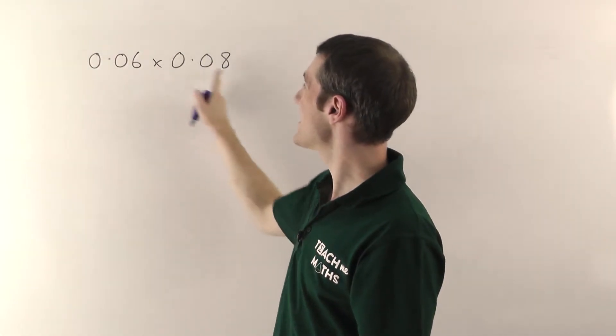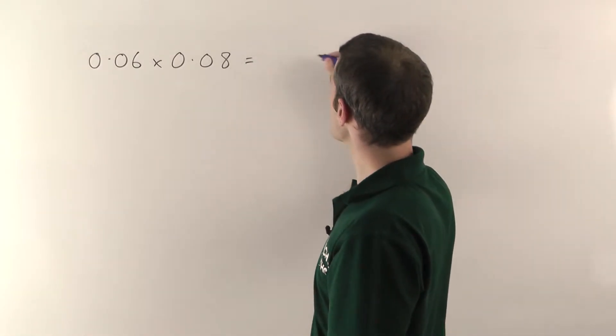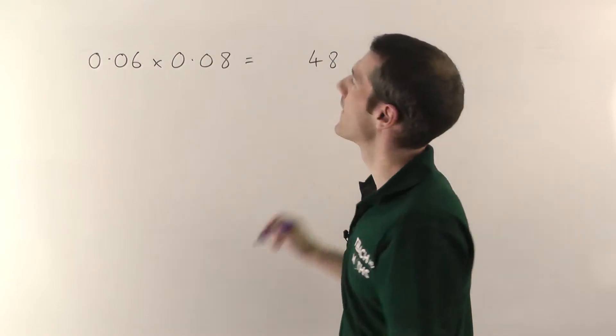So you just do 6 times 8, yeah, just completely ignore all the decimal points. Well, 6 eights are going to be 48, but then you count.